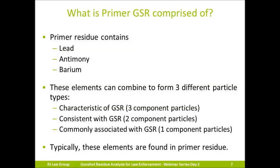It is important to note that some brands or types of ammunition may create different compositions. For example, some .22 rimfire can lack antimony in the primer, and there are non-toxic ammunitions which could be lead-free. In addition to lead, barium, and antimony, other elements such as silica, copper, tin, or aluminum can be found in GSR but are not required. There are also elements that, when seen with lead, barium, or antimony, would cause us to eliminate that particle as coming from the discharge of a firearm — for example, magnesium, chromium, or titanium. Particles containing magnesium can be found in fireworks.